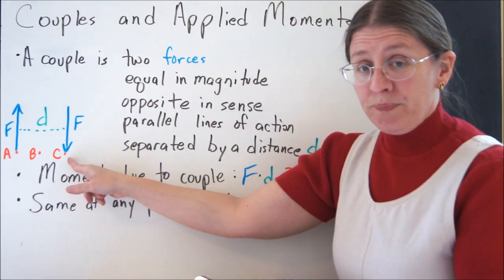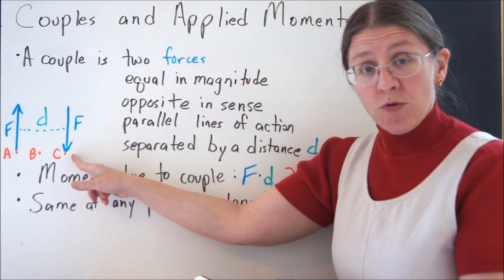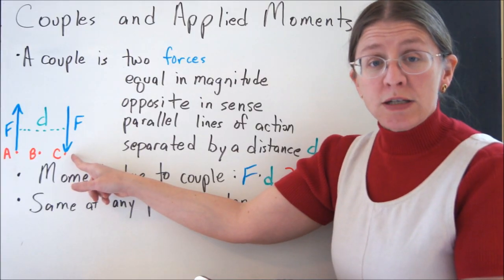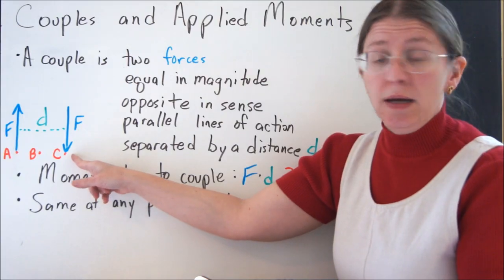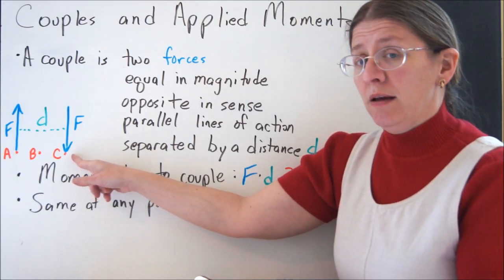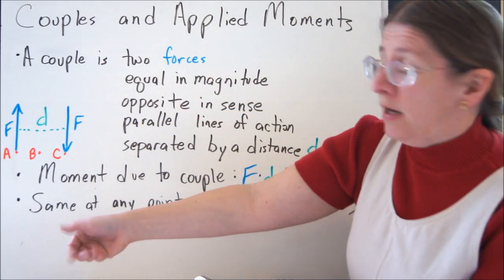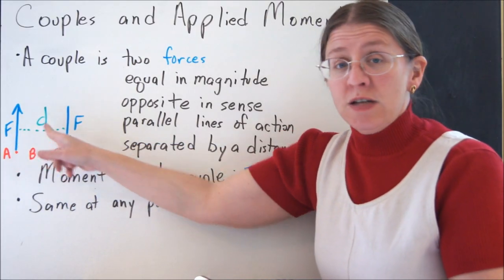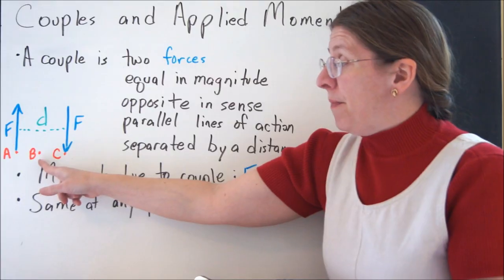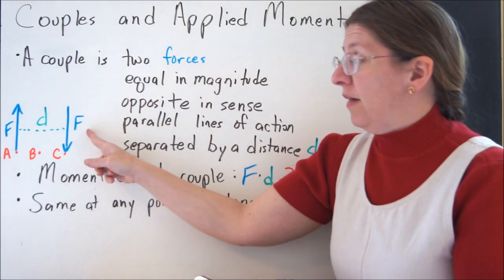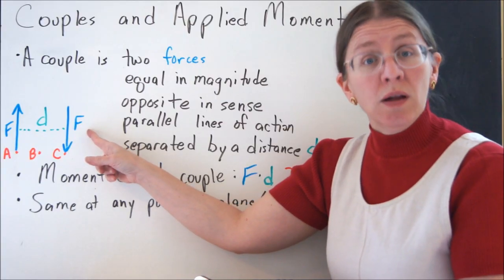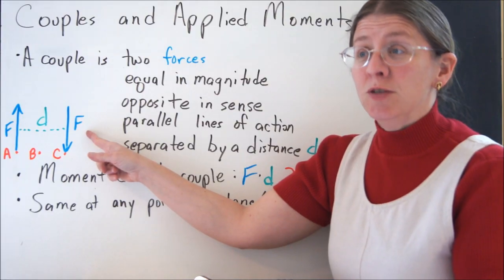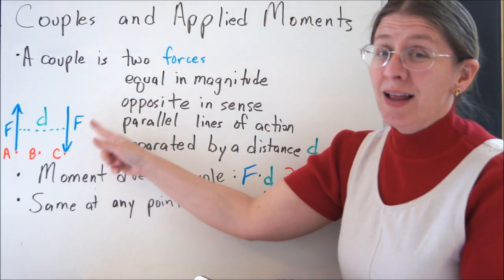Now if you look at point C, the right force doesn't go through point C. The left one is still creating a moment at point C, and it would be F times D, and it would be clockwise. And if you consider the point in the middle, you've got F times D over 2 clockwise, and this F times D over 2 clockwise, and F times D over 2 plus F times D over 2 is F times D clockwise.